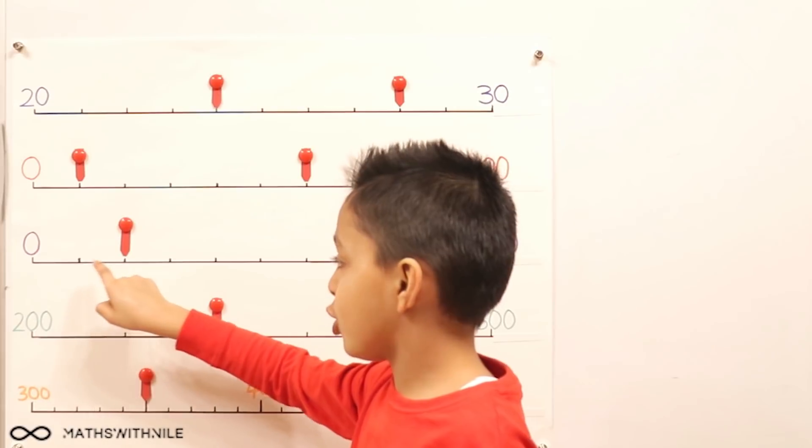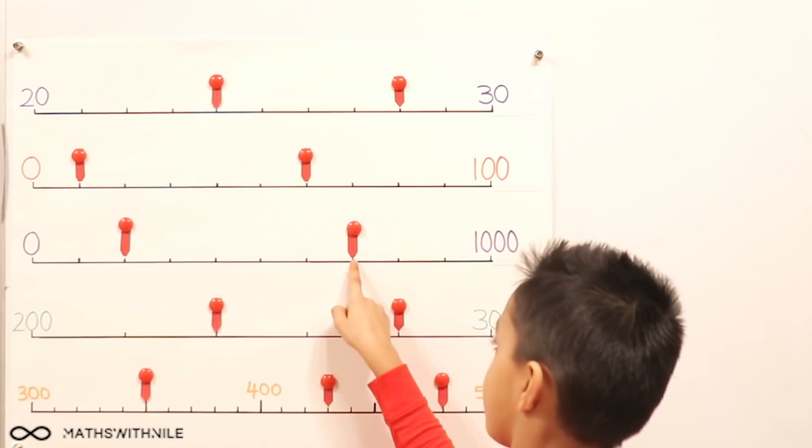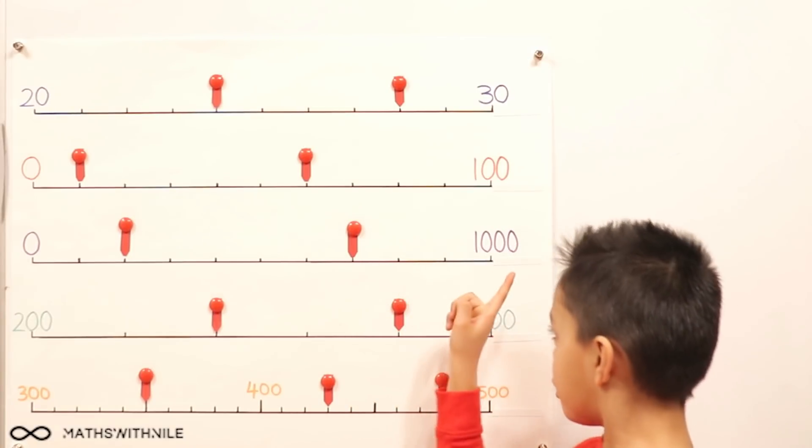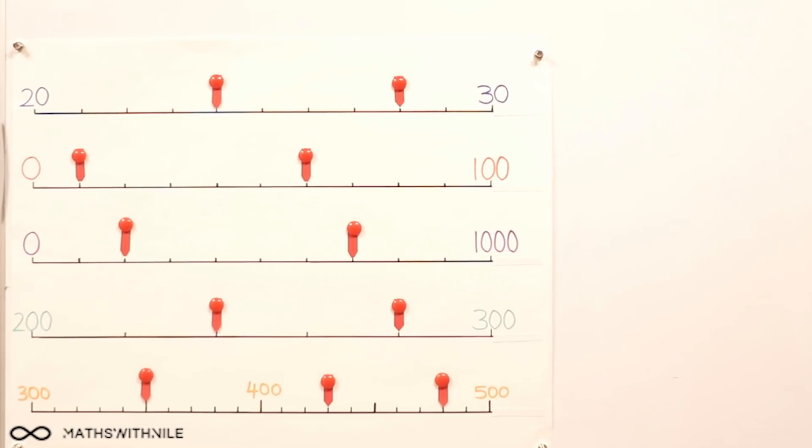Very good. So can you count up in 100s just to make sure that we're correct? Zero, 100, 200, 300, 400, 500, 600, 700, 800, 900, 1,000. Good job Niall.